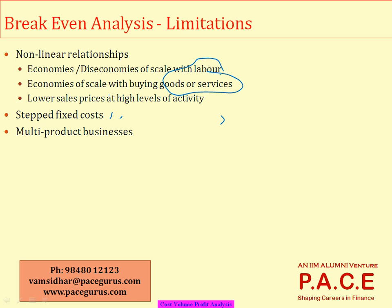Similarly on the revenue side, you can't always sell every item at the same price. You might sell 10, 20, or 50 items at 1,000 each, but beyond that you may need to offer discounts or price reductions to increase volume. This is another example of a non-linear relationship, meaning not all sales can be made at the same price.